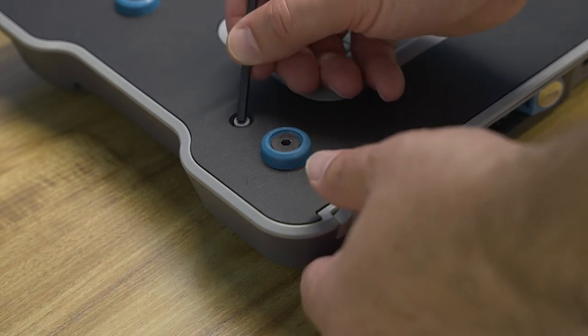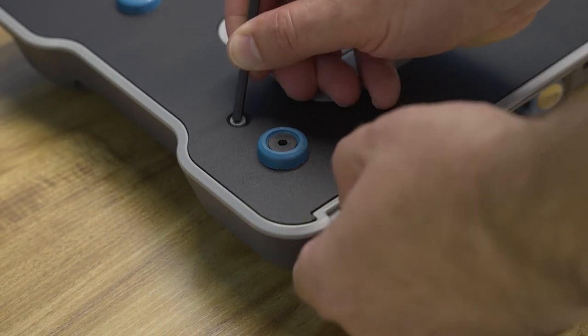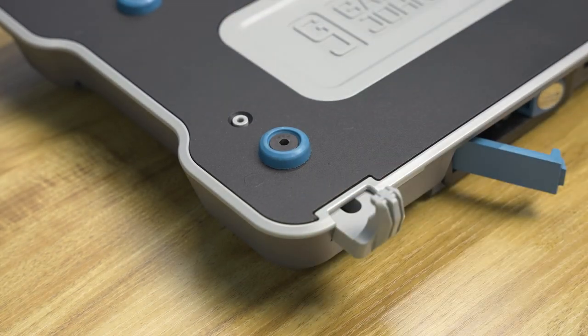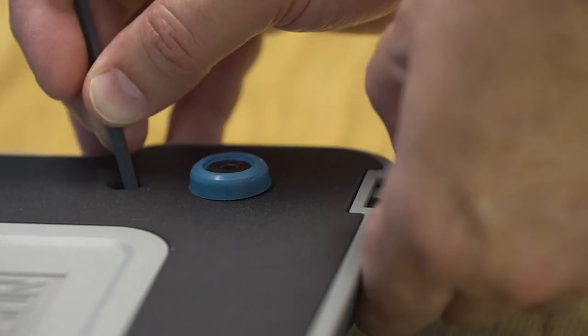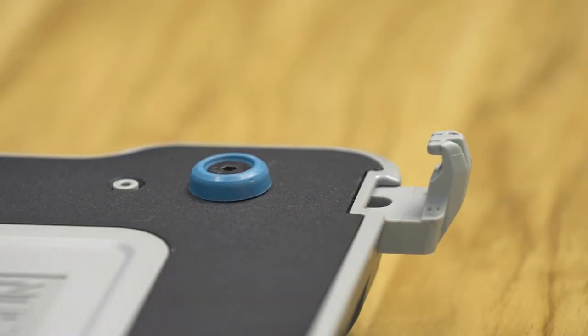To start the installation of the retrofit hook kit, adjust the front hooks of the docking station so that they protrude out one position from the most inward setting.